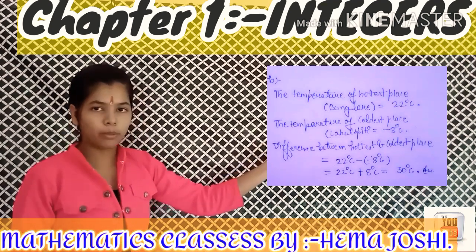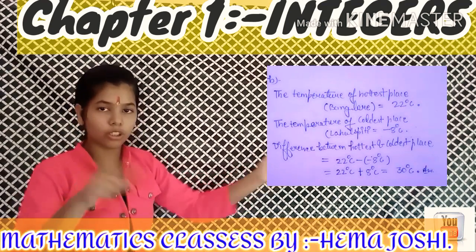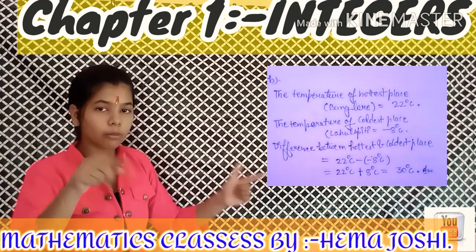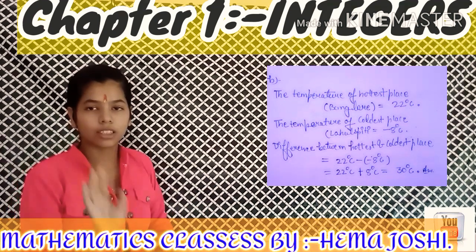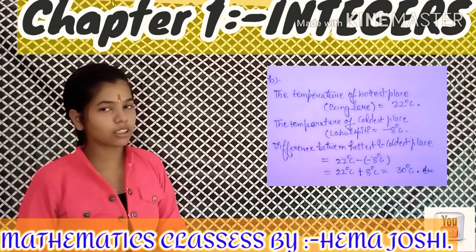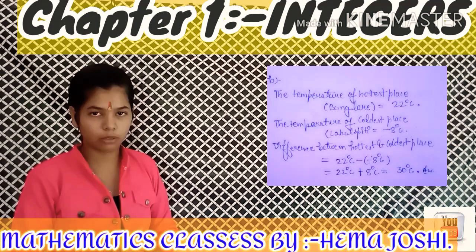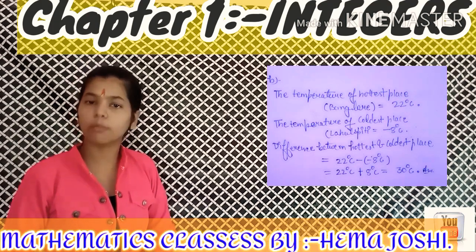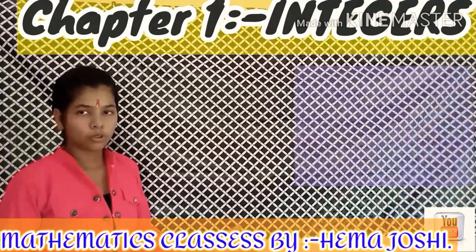So we calculate 22 plus 8, which equals 30. The sign will be positive because 22 is the larger value, so the answer is positive 30 degrees Celsius.